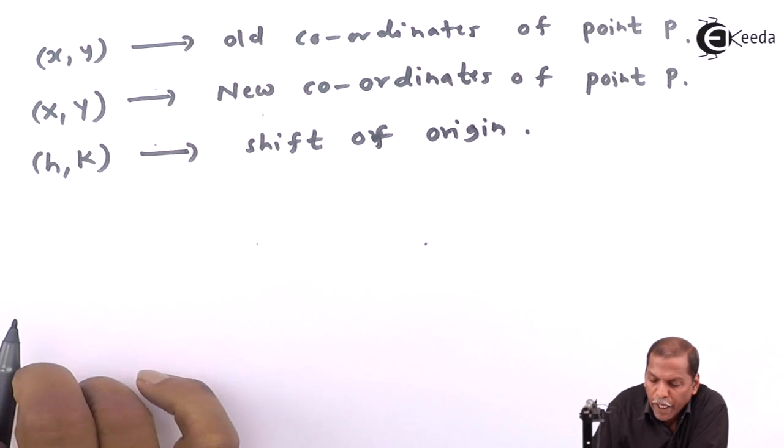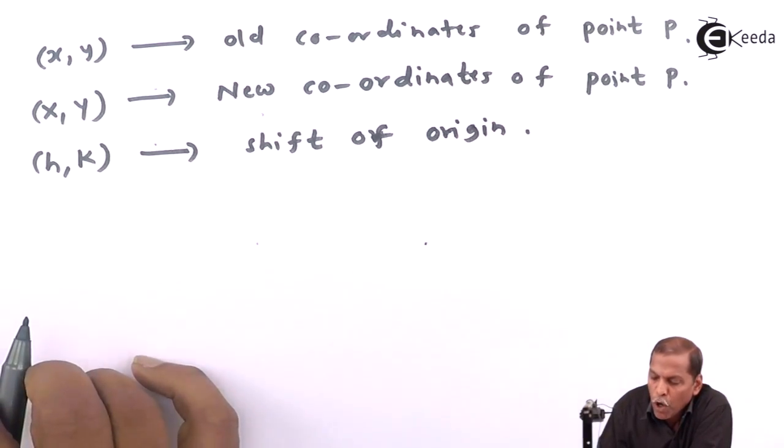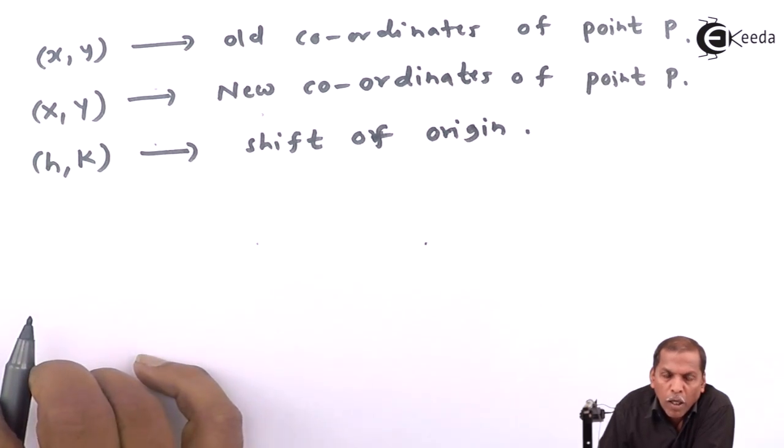Now the relationship between old coordinates of P and new coordinates of P is called the transformation equation, which is also called the formula for shift of origin.